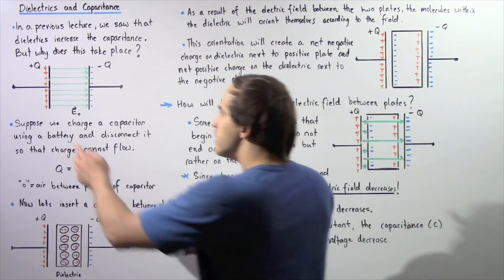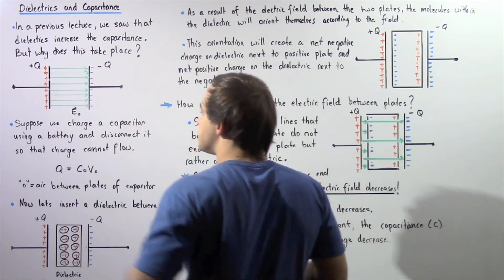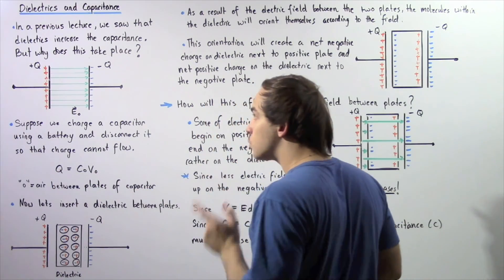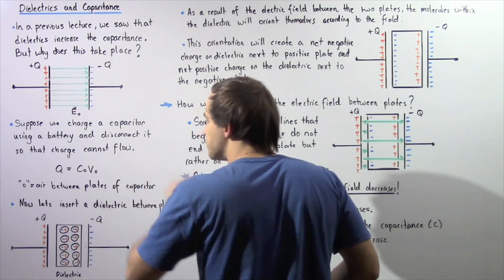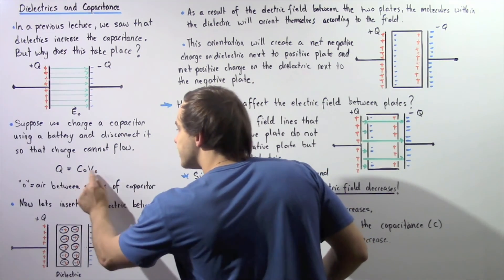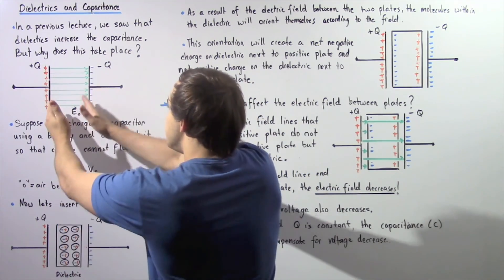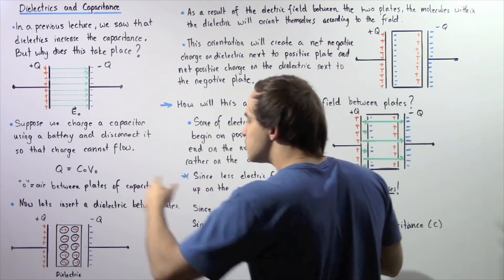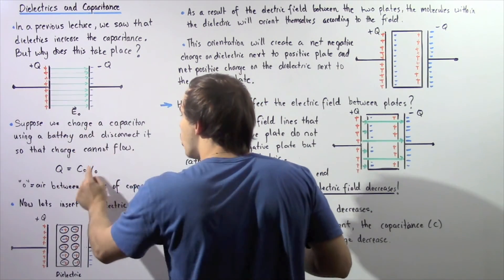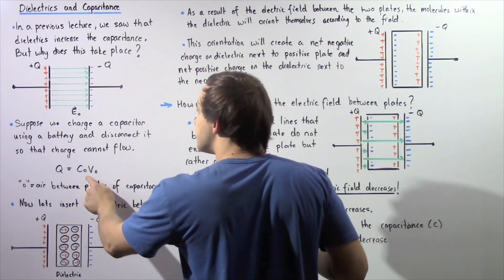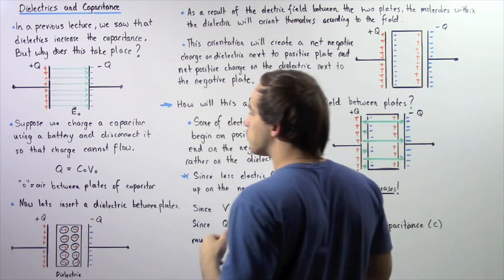Now initially, the quantity of charge on either one of these plates is equal to the product of the capacitance and our voltage, where the subscript notation simply means there is air present between these two plates. So this is the capacitance of our plate when there is air present, and this is the voltage of our plate when there is air present.